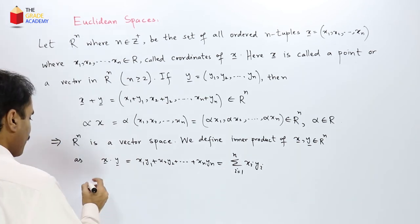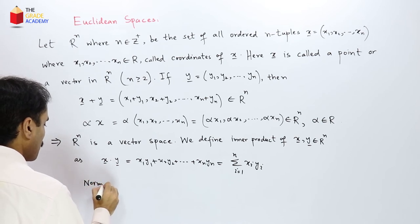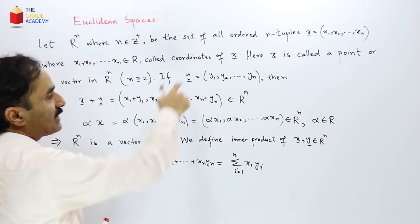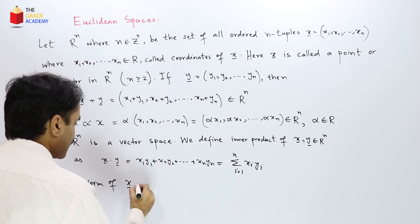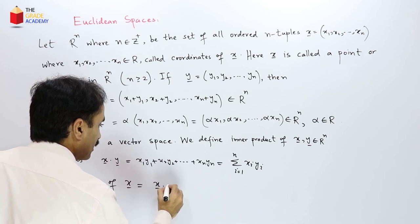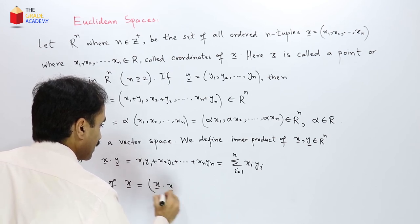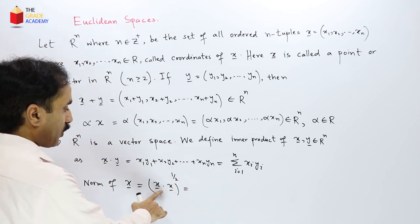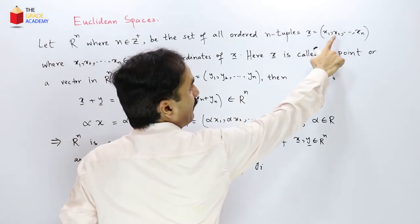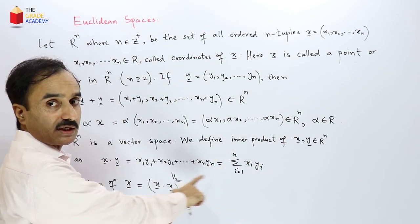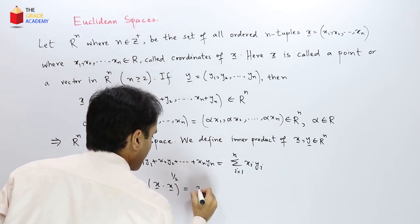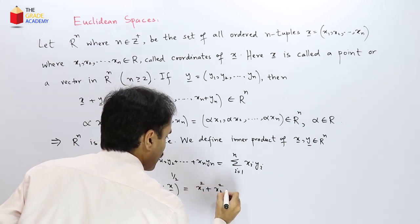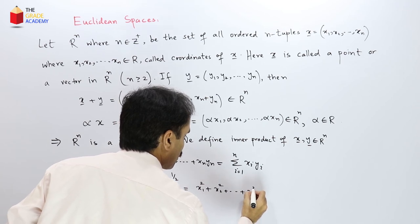So we also define norm of a vector x belonging to this vector space as the inner product of that vector with itself raised to the power 1 by 2. So inner product of x with itself according to this definition of inner product will be equal to x1 times x1 which is x1 squared plus x2 times x2 x2 squared up to xn squared.